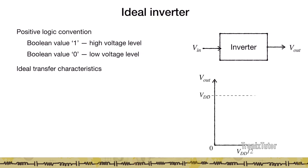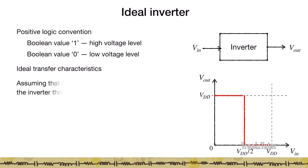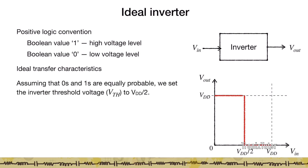I'd like to understand how the ideal transfer characteristics of an inverter should look. What do I mean by transfer characteristics? That is, I want to understand how Vout should change as Vin changes. If I look at the plot of Vout versus Vin, in the ideal case, suppose I assume equal probability that both 0 and 1 can show up at the input.